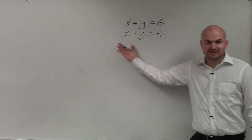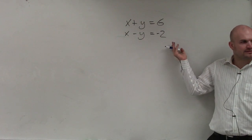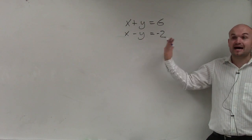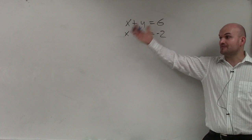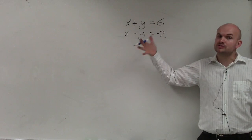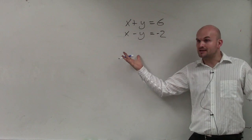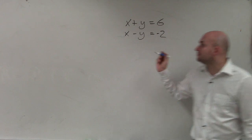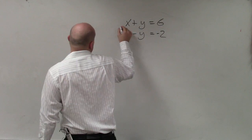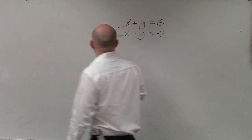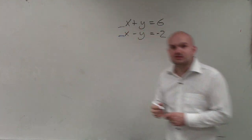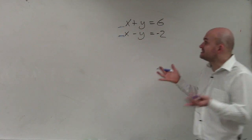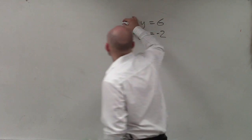Notice how everything is aligned here. If it's not aligned, you're going to have to rewrite the equation so they are aligned. Now that it's aligned, to apply elimination or the addition method — whatever you want to call it — we need to make sure that our coefficients are exactly the same.